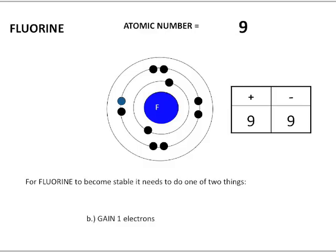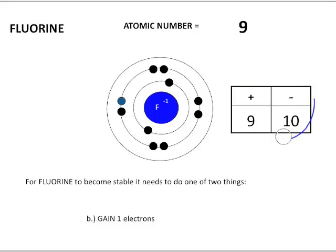Now look at the positives to negatives count. We no longer have a surplus of positives — we have a surplus of negatives. We have nine positives and 10 negatives: nine protons and 10 electrons. So fluorine has an excess charge of negative one.